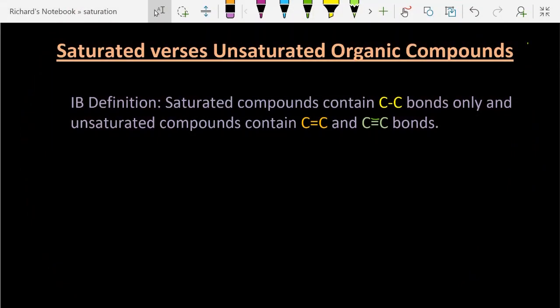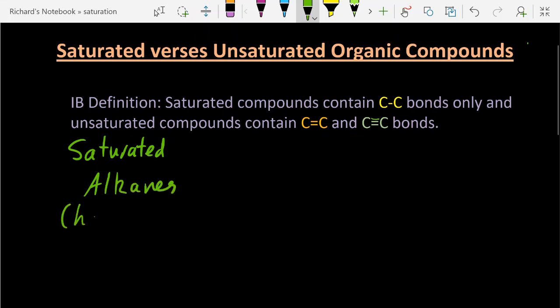So what does that mean for you? Well, essentially saturated compounds are the alkanes. Now I would argue that you could also have the haloalkanes and alcohols there as well, but the IB up until now has focused on just the alkanes.